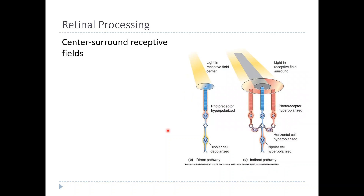The effect of light in the center versus the surround depends on how they're connected to the bipolar cells. There are basically two types of center-surround receptive fields. On-center cells are bipolar cells that are activated by light in the center. Remember, light causes photoreceptors to be hyperpolarized. So in an on-center cell, light hits the photoreceptor, hyperpolarizes it, and then depolarizes the bipolar cell.